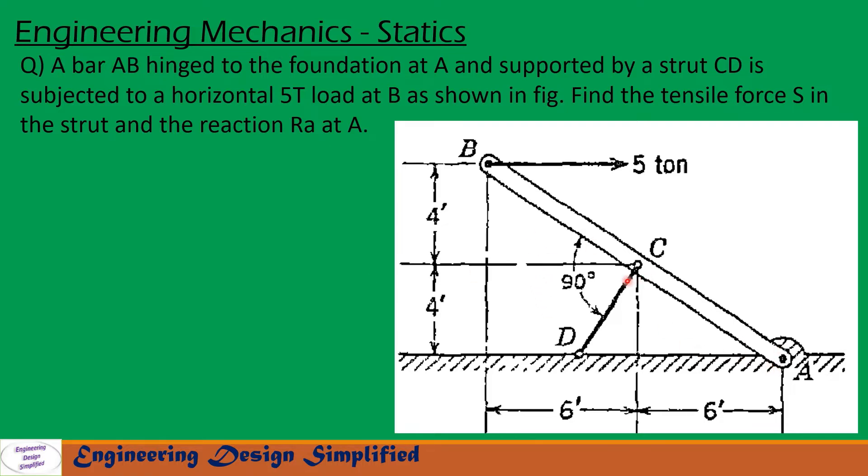In this problem, given is a bar AB hinged at A, and at B a 5-ton load is applied horizontally. At C, a strut CD is attached. The angle between this strut and this bar is 90 degrees. Distance from here to here is 6 feet, and from here to here is 6 feet. This distance from here to here is 4 feet, and from here to here is 4 feet. We need to find the tensile force in this strut and reaction at RA. Let us see in the coming slides how to solve this problem.